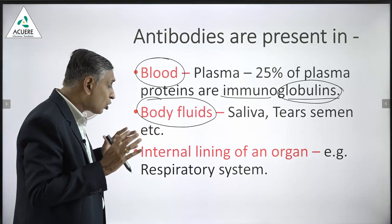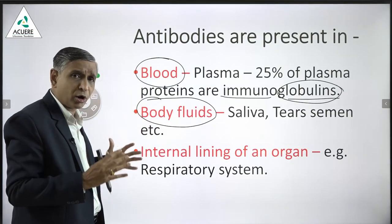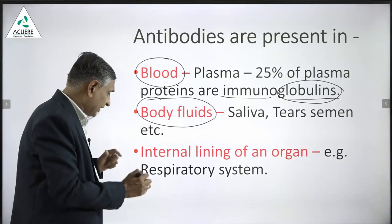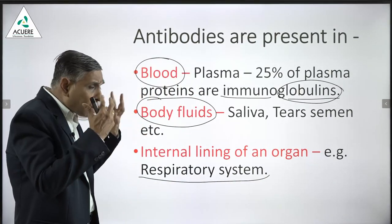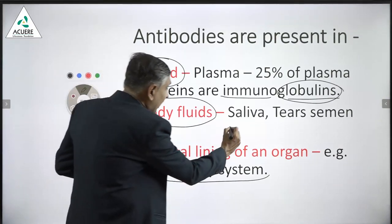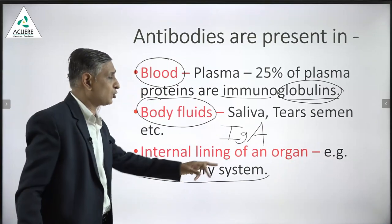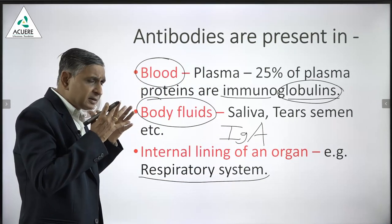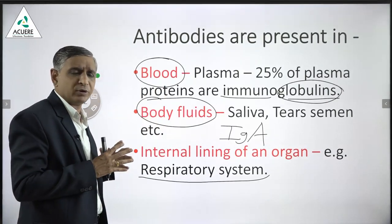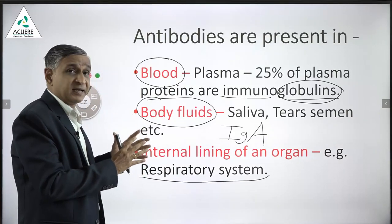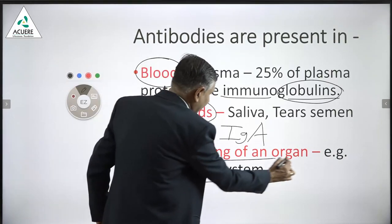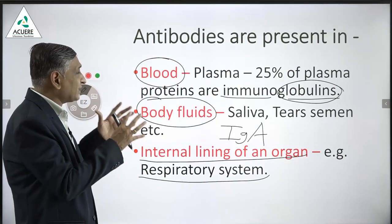The third place is the mucosa — the internal lining of multiple organs. The best example is the respiratory system: the lower respiratory tract is totally sterile because it is loaded with IgA, known as surface antibodies. Similarly, the gastrointestinal tract is also lined with multiple antibodies, very important for the body's defense mechanism.